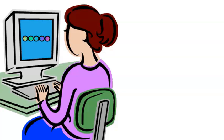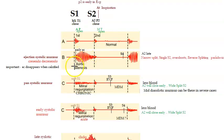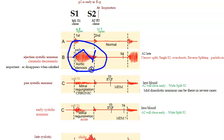To summarize: ejection systolic murmur is seen in aortic stenosis — crescendo-decrescendo. For S2, there will be narrow split S2, single S2, or reverse split S2. The two main things to remember are ejection systolic murmur and narrow split or reverse split S2.